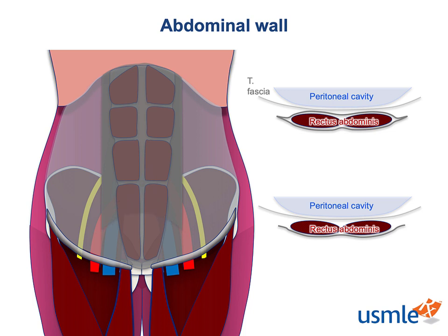The most important anatomic relationship to remember is with the inferior epigastric vessels, which arise from the external iliacs just before they cross under the inguinal ligament to become the femoral vessels. They penetrate the transversalis fascia and run inferior to the arcuate line and penetrate the rectus abdominis sheath. Because these two vessels supply both the muscle and the superficial skin and fat through perforator vessels, a successful free TRAM flap relies on the ability to dissect out the inferior epigastrics and reanastomose them to the internal thoracic vessels in the chest wall.